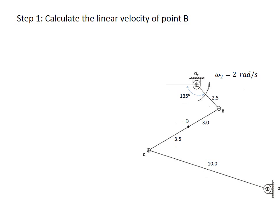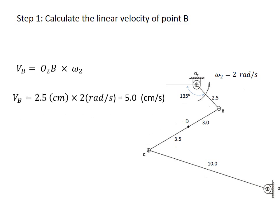In the first step, we calculate the linear velocity of point B. Point B is on link 2 and is rotating with constant velocity. The linear velocity of point B equals O2B — the length of the link — times the angular velocity omega 2. Therefore, the amplitude of this vector equals 2.5 centimeters times 2 radians per second, which equals 5 centimeters per second. This vector is perpendicular to link O2B and is in the direction of the angular velocity.